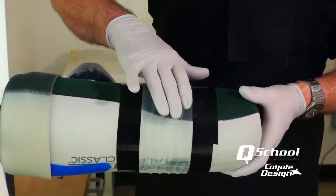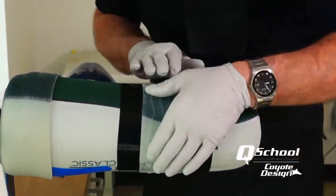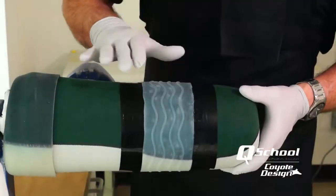So as we push the air out, we can reset our edge. Yeah, and just keep working your hands over the whole thing. Make sure it's on there nice and secure. Get rid of those air pockets.